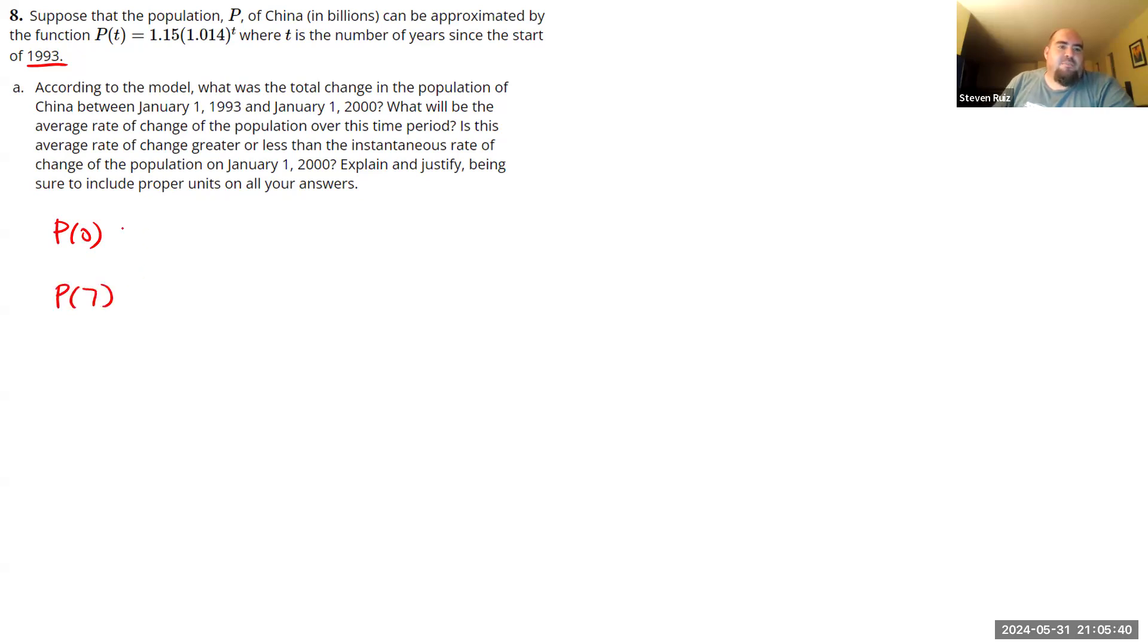So what is P of 0? So that's 1.15 times 1.014 to the 0. So anything raised to the power of 0, any non-zero number raised to the power of 0 is 1. So this comes out to be 1.15 billion.